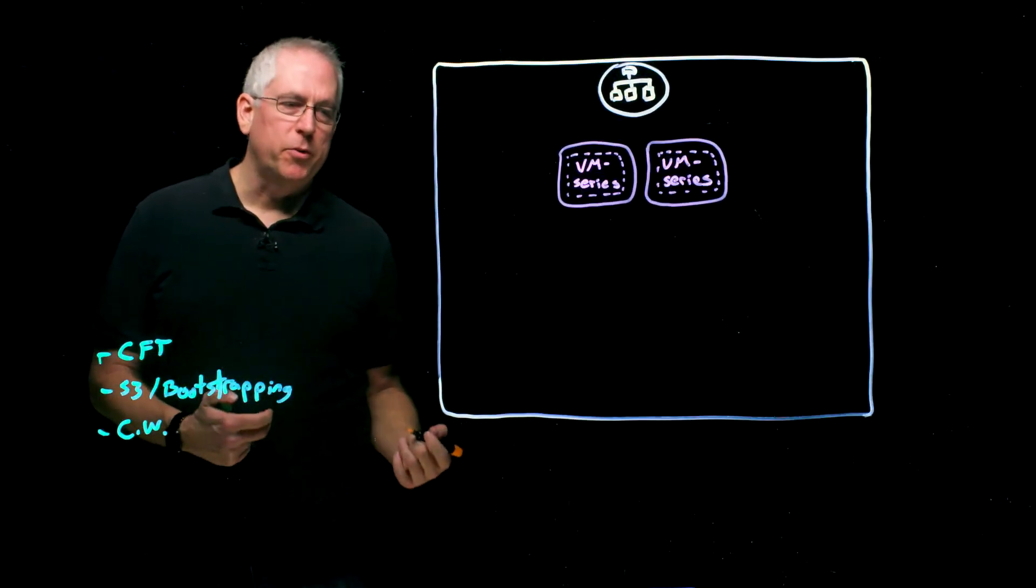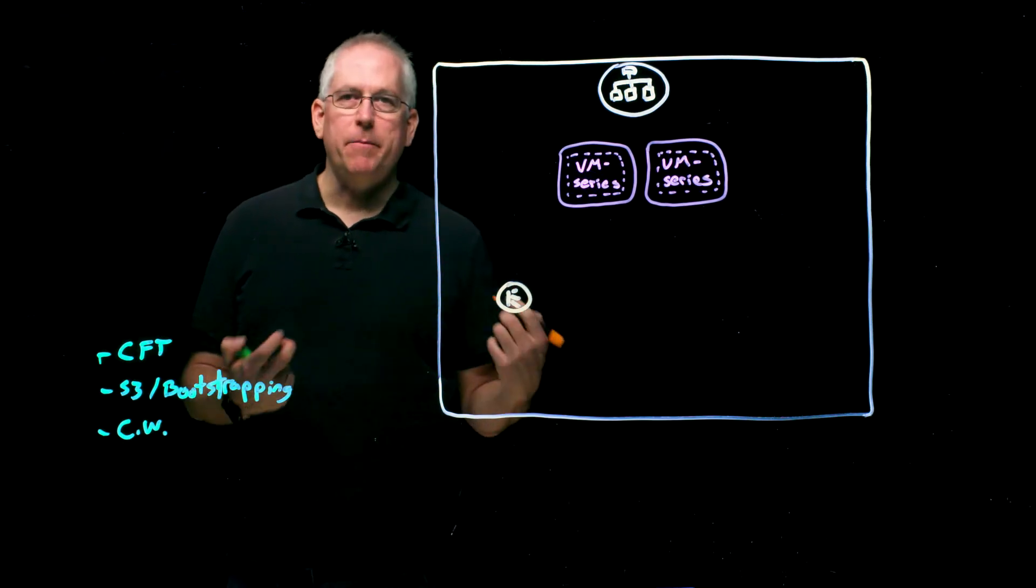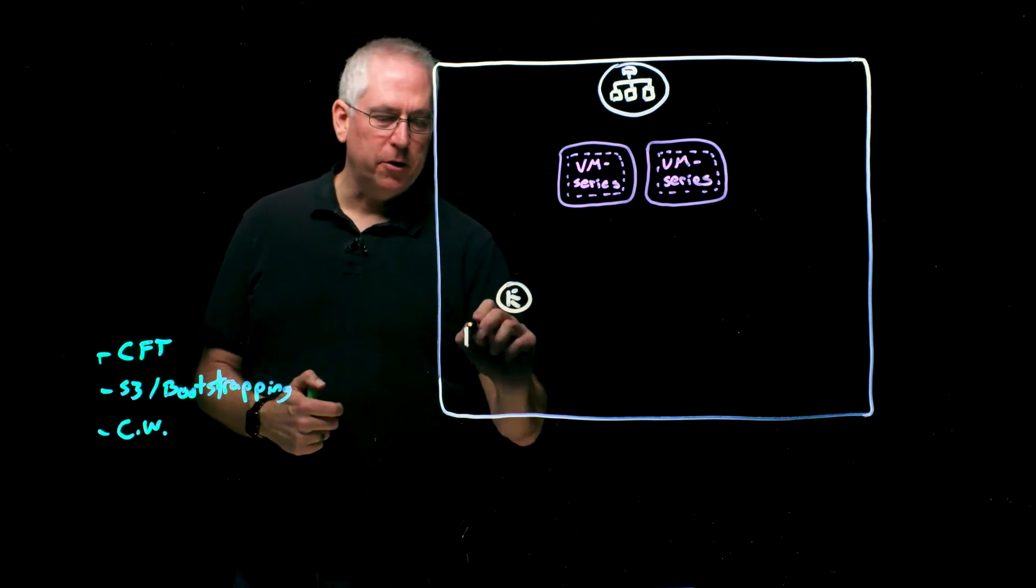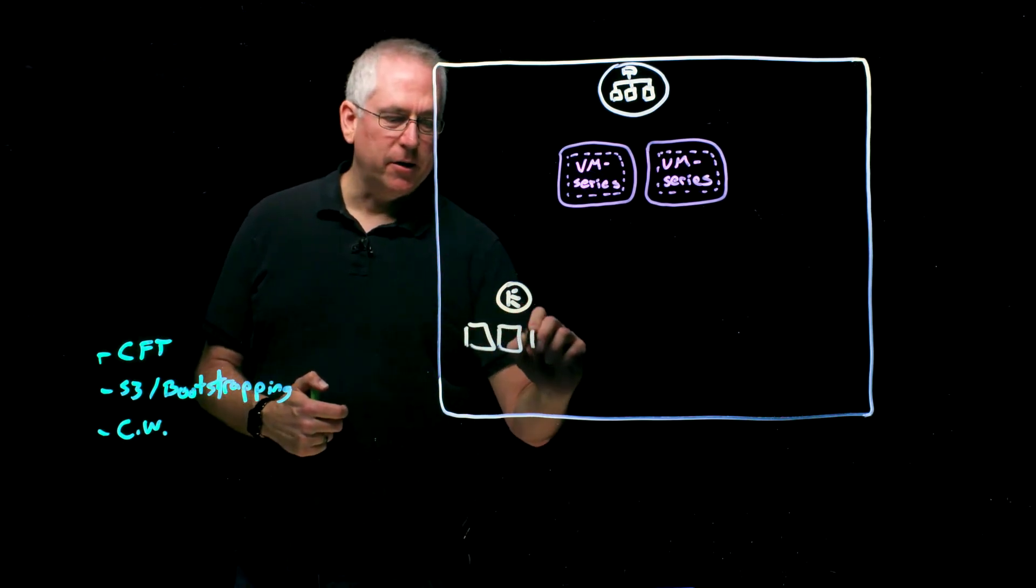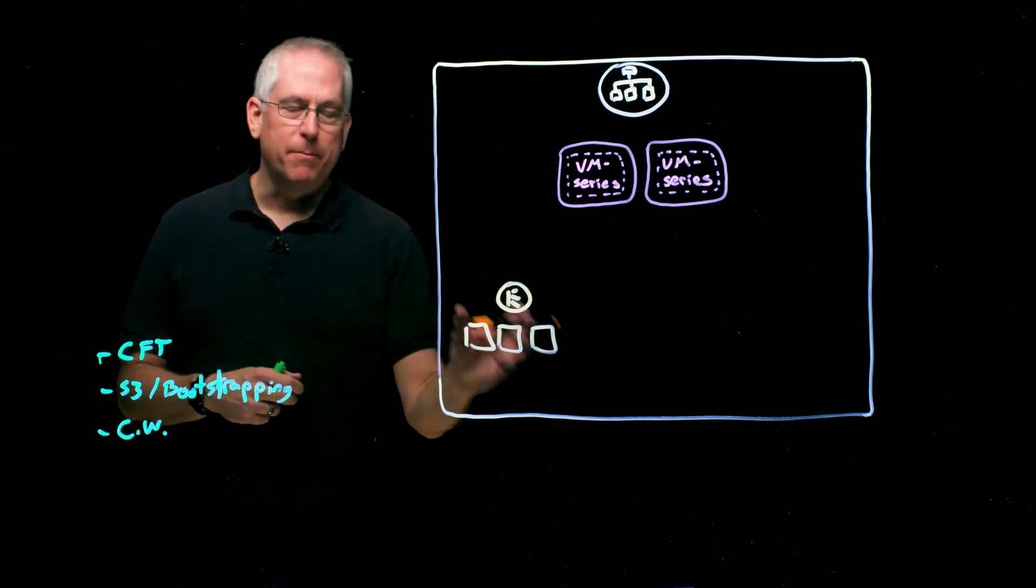So when a new NLB is deployed with the correct tag, it's likely going to be deployed as a template that will include the application servers or compute that are actually being balanced. So this might be a web tier, for example.